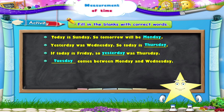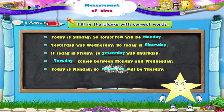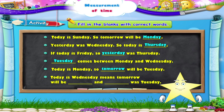The next blank now. Today is Monday, so blank will be Tuesday. Tomorrow will be Tuesday. The last blank, Starry: Today is Wednesday, so tomorrow will be blank and blank was Tuesday. Today is Wednesday, so tomorrow will be Thursday and yesterday was Tuesday.